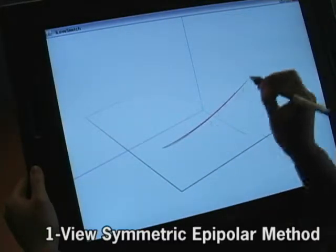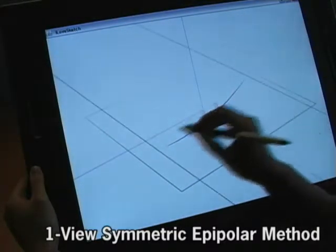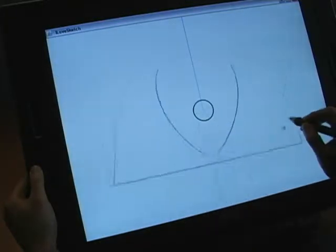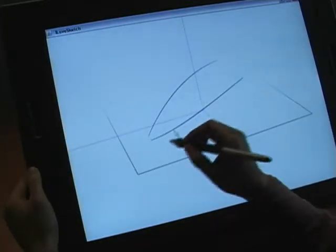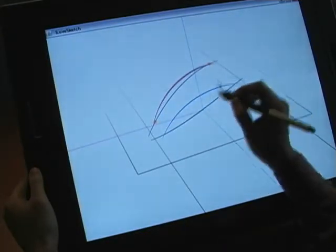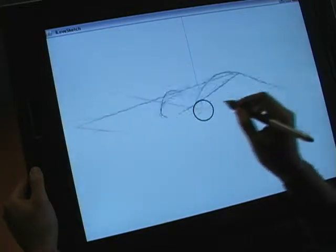In the single view symmetric epipolar method, the user draws the projected images of a pair of symmetric curves with respect to the center plane from a single viewpoint by using two receding lines to the vanishing point. Then the system creates a pair of 3D curves.